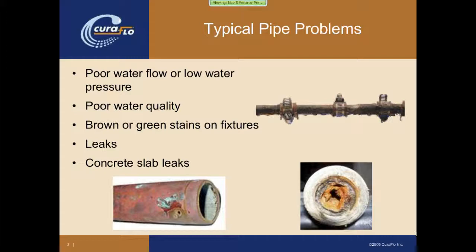Brown or green stains on fixtures — depending on whether you have copper or galvanized piping — develop over time and leave stains on fixtures, bathtubs, toilets, et cetera, which become problematic over time. And then leaks, both within walls and in ceilings, as well as concrete slab leaks, which are particularly difficult to identify where they are, where they're coming from, what the causes are, and then how to access them to fix them.